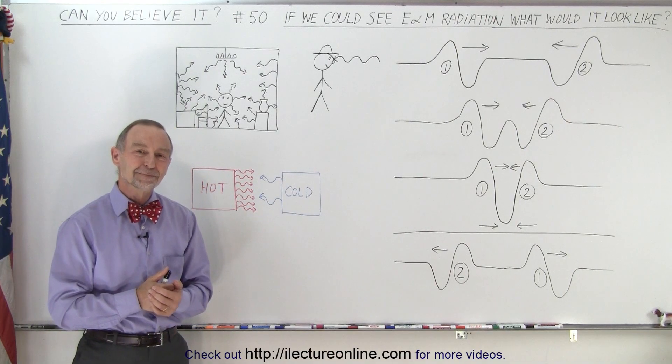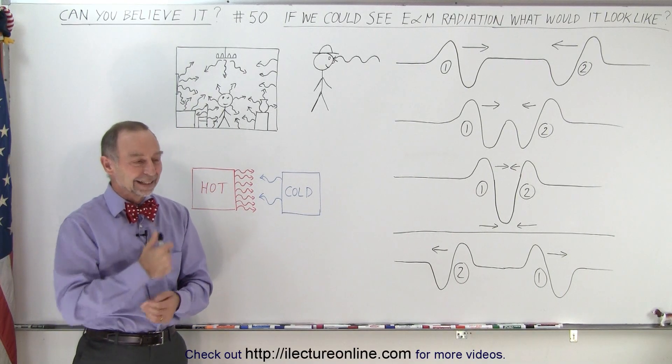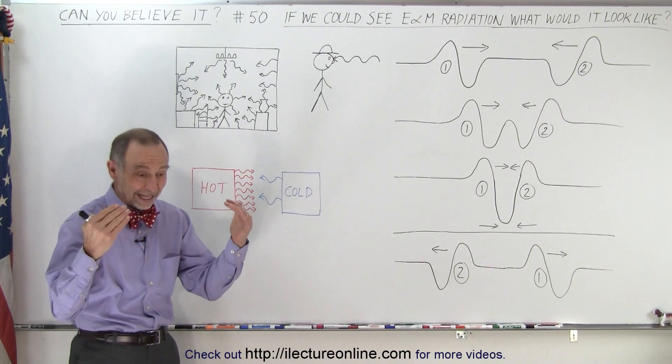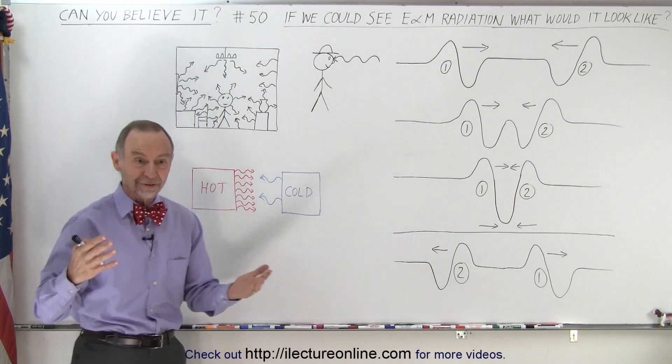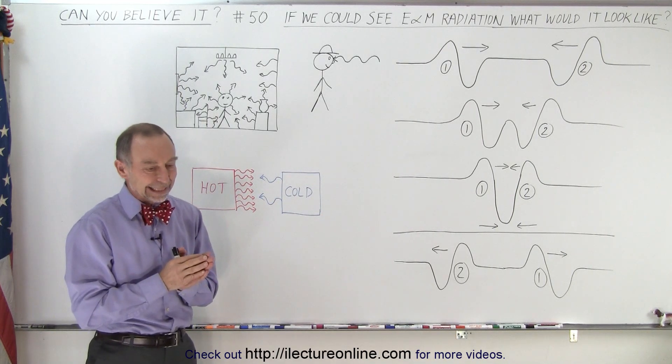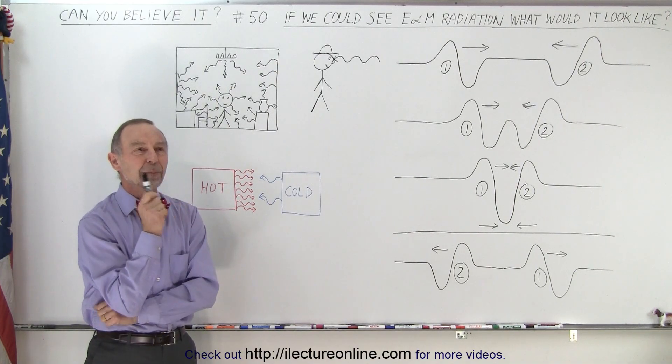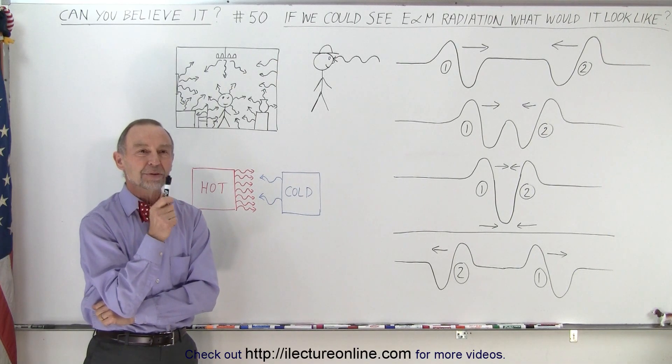So would those wiggly lines be in color? So that's a good question. Would all those wiggly lines in the different portions of the spectrum be all kinds of different colors, like invisible light? That is hard to say, and I think it only depends upon how our brains would interpret the signals.